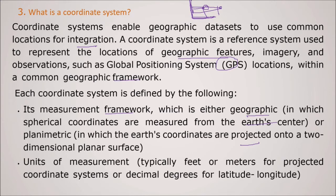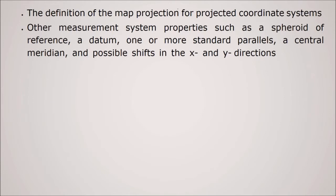The unit of measurement also, the earth coordinate system is defined by unit of measurement also. So it can be feet or meter for projected coordinate system or decimal degrees of latitude and longitude. So the definition of map projection for projected coordinate system, other measurement system properties like spheroid of a reference, datum, one or more standard parallels, central meridian, a possible shift in x and y directions.